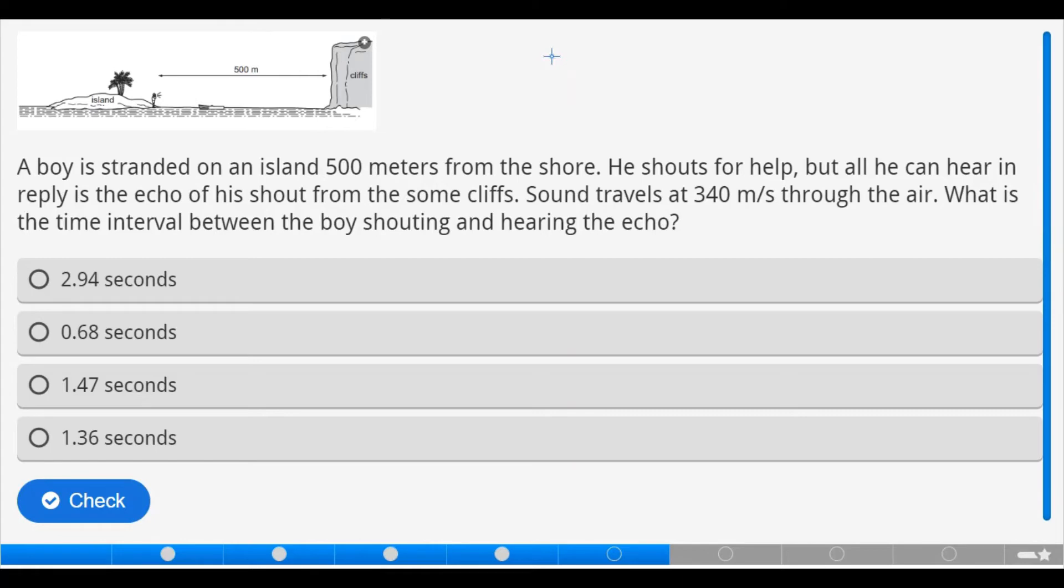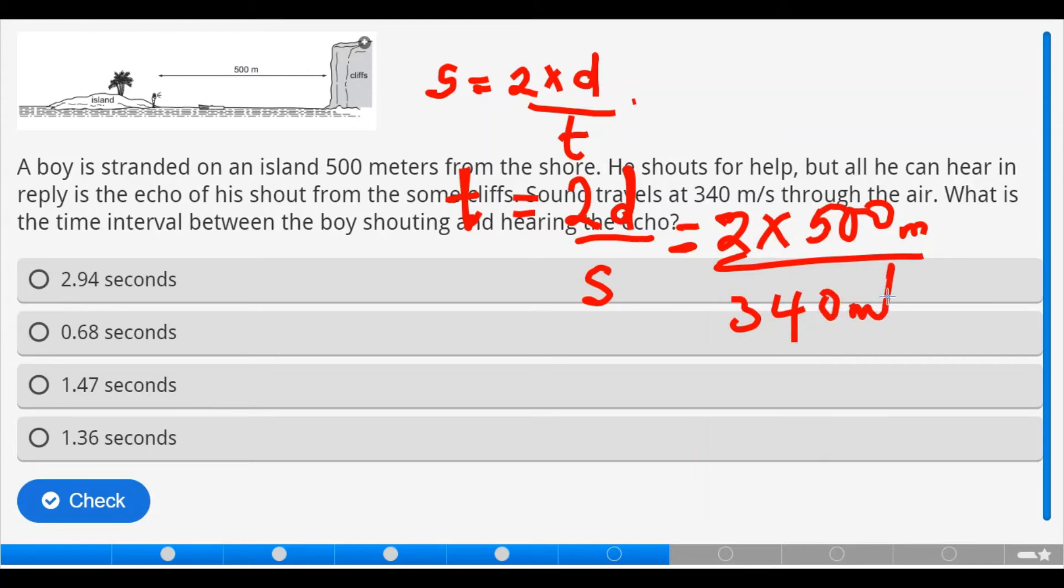When we are looking at echo, the speed associated with sound for an echo will be 2 multiplied by the distance divided by the time. Now, we are dealing with time. We make T the subject of formula. Then we have 2D over S. So, let's substitute. We now have 2 times distance is 500 meters divided by 340 meters per second. That means we have 1000 meters divided by 340 meters per second.